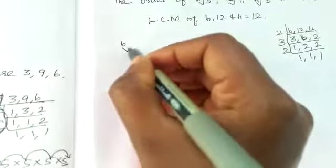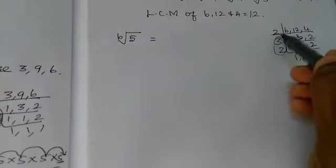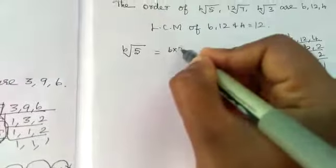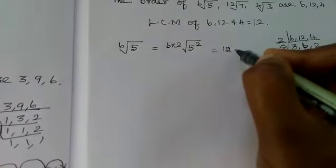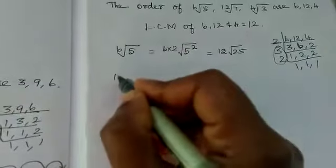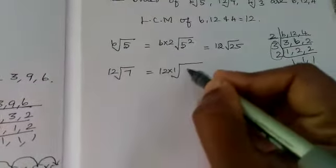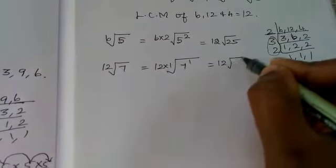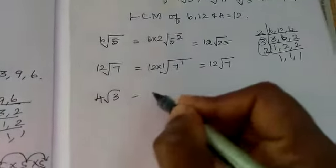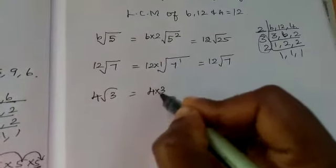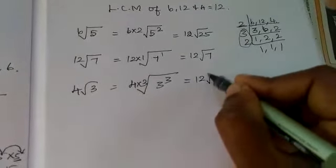Now, how will we make this 6 root 5 into 12? Multiply by 2, the remaining number. 6 into 2. The same manner, 5 power 2. Equal to 12 root 25. Next, 12 root 7. Here, which number? 12 into 1. 12 root of 7. Next, 4 root 3 is multiplied by which number? 4, 3's are 12. The same manner, 3 cube. 12 root of 27.